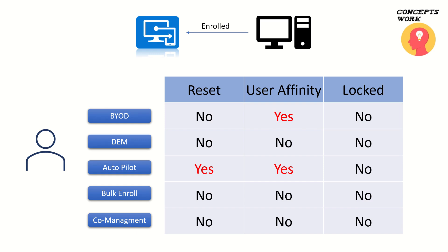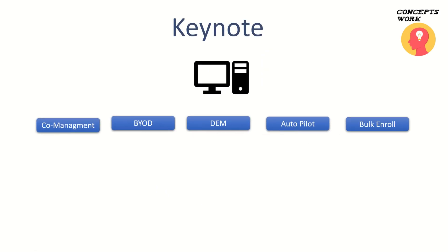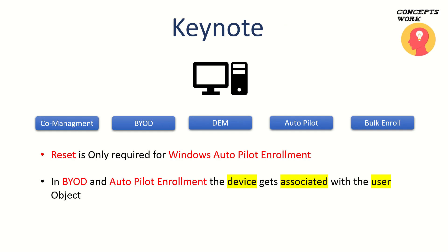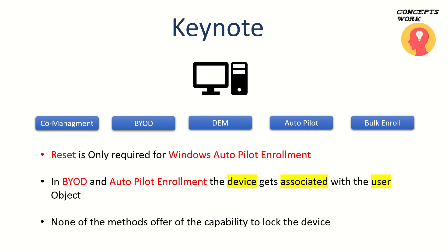There is a table which shows which feature is available for which enrollment method. The key takeaway is that a device reset will only occur if you are using Windows Autopilot enrollment — when Autopilot enrollment is initiated by the user, a device reset is required. In case of BYOD and Autopilot enrollment, the device gets associated with the user object. None of the methods currently offer the capability to completely lock the device, and that's why there is something called DEM. Enrolling and unenrolling a device from an MDM solution requires admin access, but when we talk about DEM, I will specifically explain how you can achieve a scenario where you give an enrolled device to users but they should not be able to unenroll it.